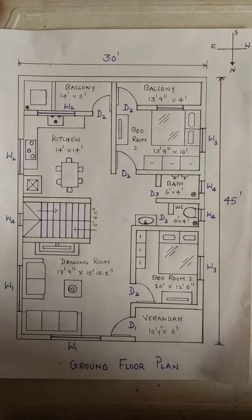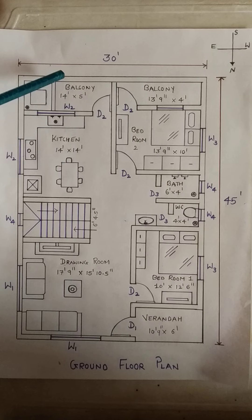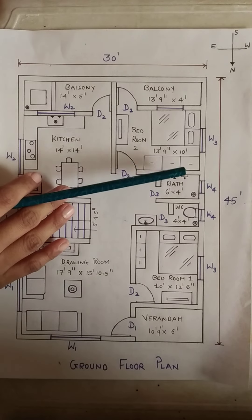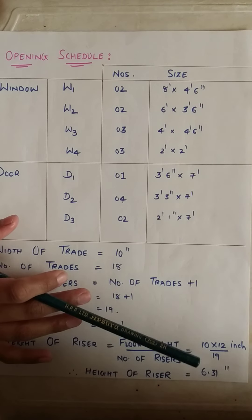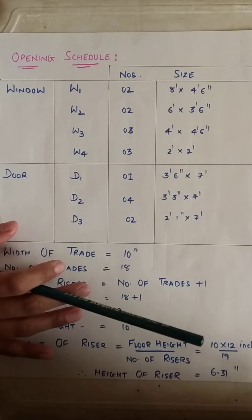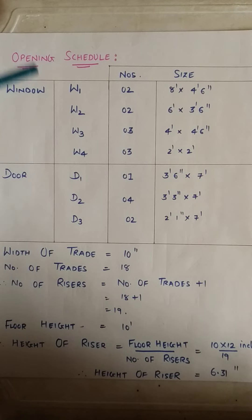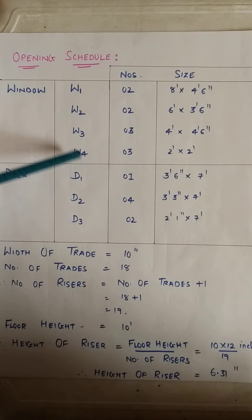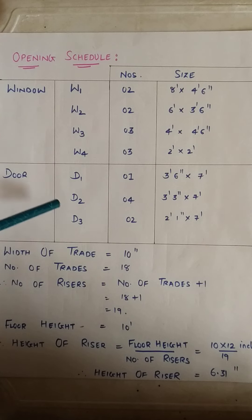Talking about doors, we have three categories. D1 is our main door. D2 are the doors provided in the bedrooms and kitchen. D3 are the doors provided in the bath and water closet. Now looking at the opening schedule — here you can see the dimensions of all doors and windows. The dimensions of windows W1, W2, W3 and W4 and doors D1, D2 and D3 are shown respectively in the opening schedule.